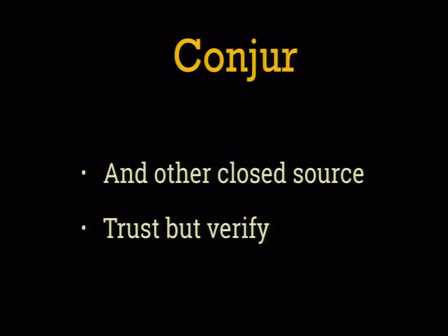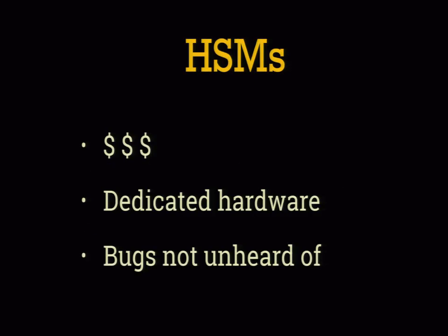Barbican was going to be the OpenStack equivalent to Amazon KMS, but it's dead. I mention Conjur specifically because I see it a lot, but I'm also talking about all other closed-source proprietary secrets management platforms. Unless you're using a system where you have to use it because it's part of the platform, be very careful around closed-source secrets management tools. Always be sure you can actually verify a vendor's claims when they tell you how secure something is. People way smarter than me continue to get this stuff wrong all the time.